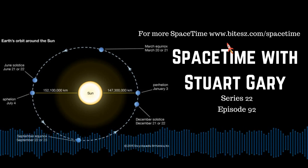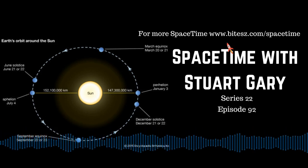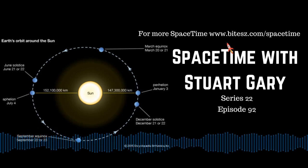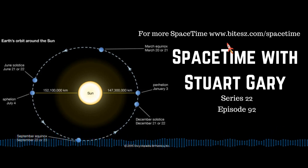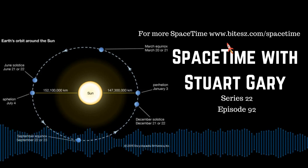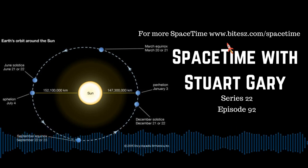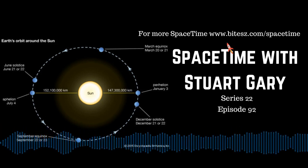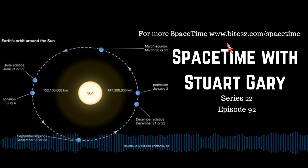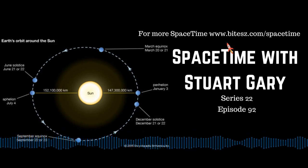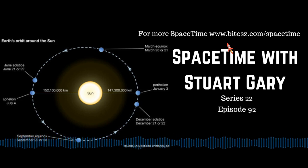Researchers at the Karlsruhe Tritium Neutrino collaboration in Germany determined that the neutrino's mass must be less than 1.1 electron volts, or 500,000 times less than an electron's mass, by analysing the beta decay of tritium, a radioactive hydrogen isotope which emitted an electron and a neutrino. By measuring the emitted electrons' energies, it allowed the authors to estimate the neutrinos' mass as well.